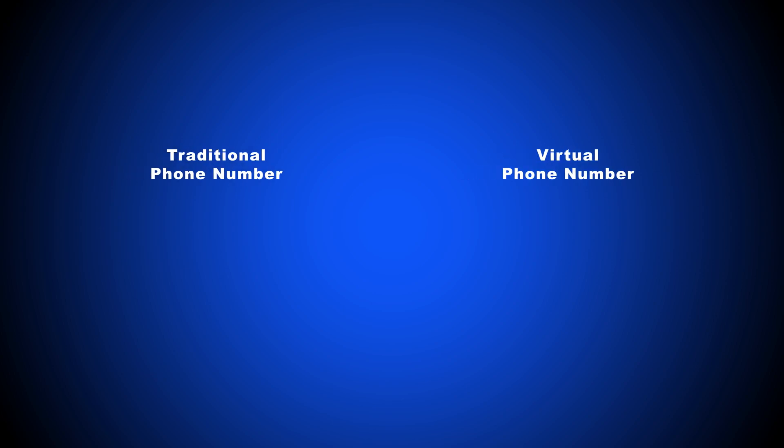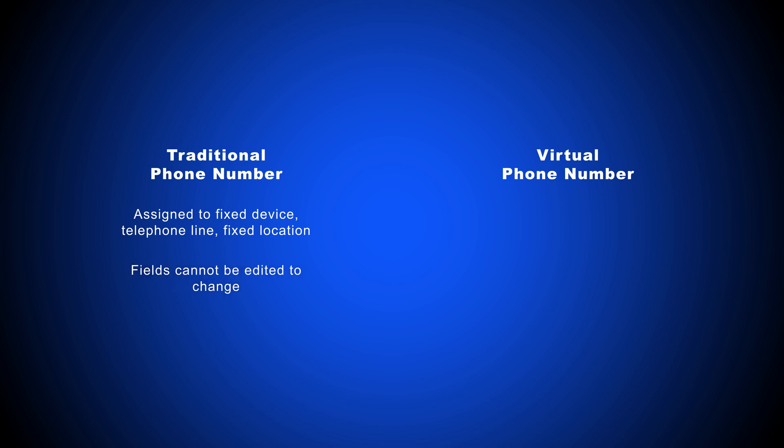For those who are just entering the VoIP world, it may seem weird that a communication system centered around the internet would still use a numeric phone number as landlines do. However, there are a few key differences to note between landline numbers and VoIP numbers. First of all, the traditional numbers you'd get from a landline phone company are assigned to a fixed device, telephone line, and fixed location. After the phone company assigns these metrics, you can't just edit a field to change them. This limits call routing to devices within the physical location of your office.